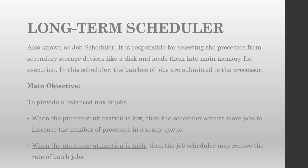Long term schedulers use job batches to submit them to the processor. Their main objective is to provide a balanced mix of jobs. That means if a processor's utilization is less, then long term schedulers make sure that they submit more jobs so that the number of processes ready to execute will increase. If the processor's utilization is high, long term schedulers make sure that the job admission rate will reduce.